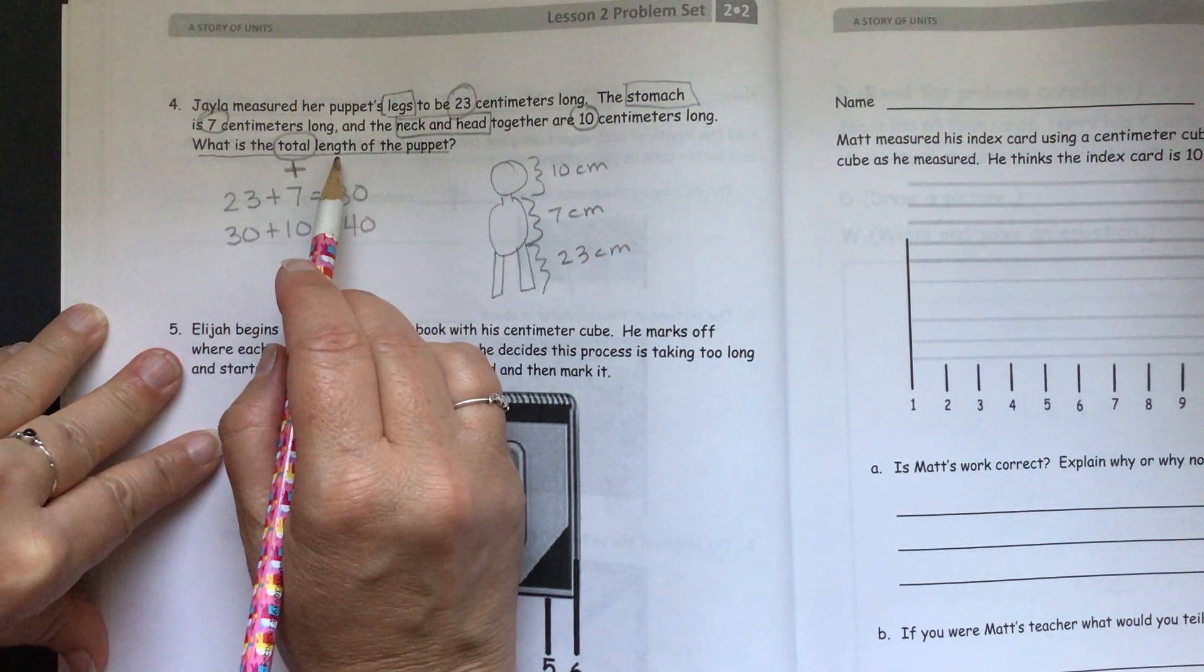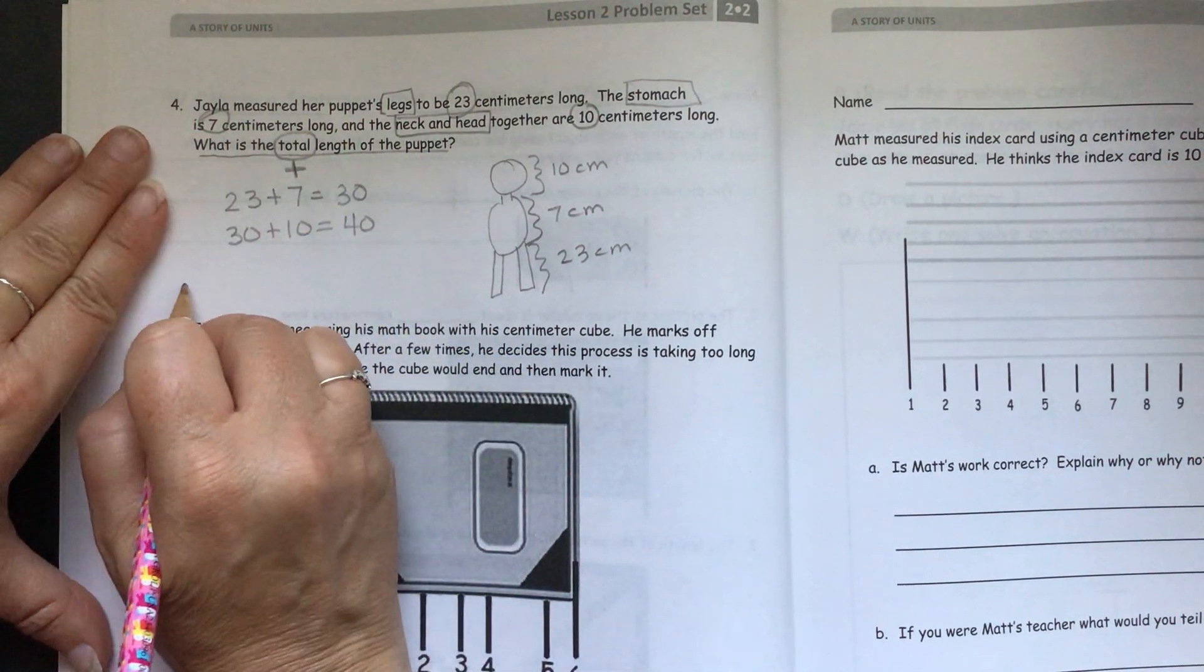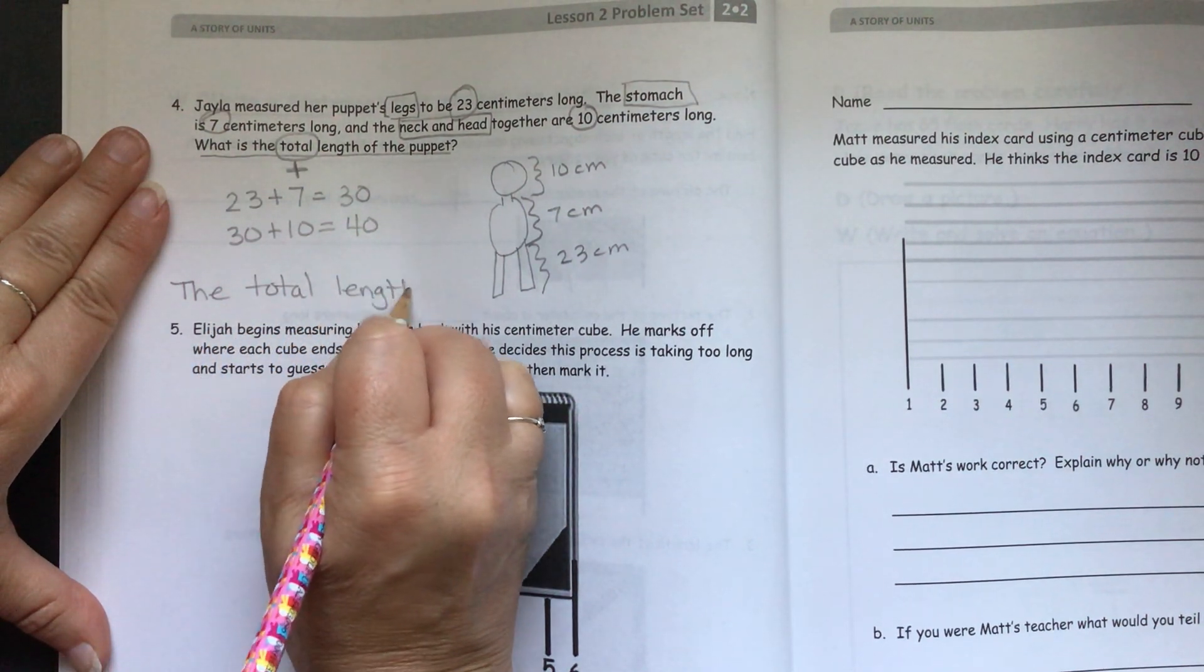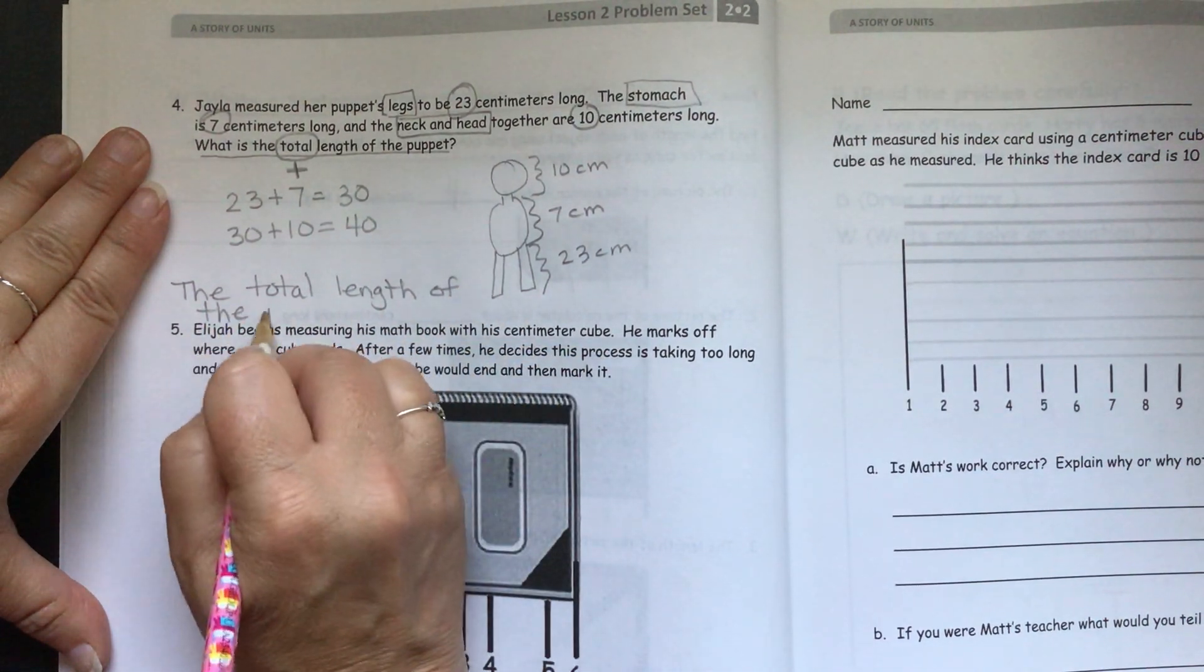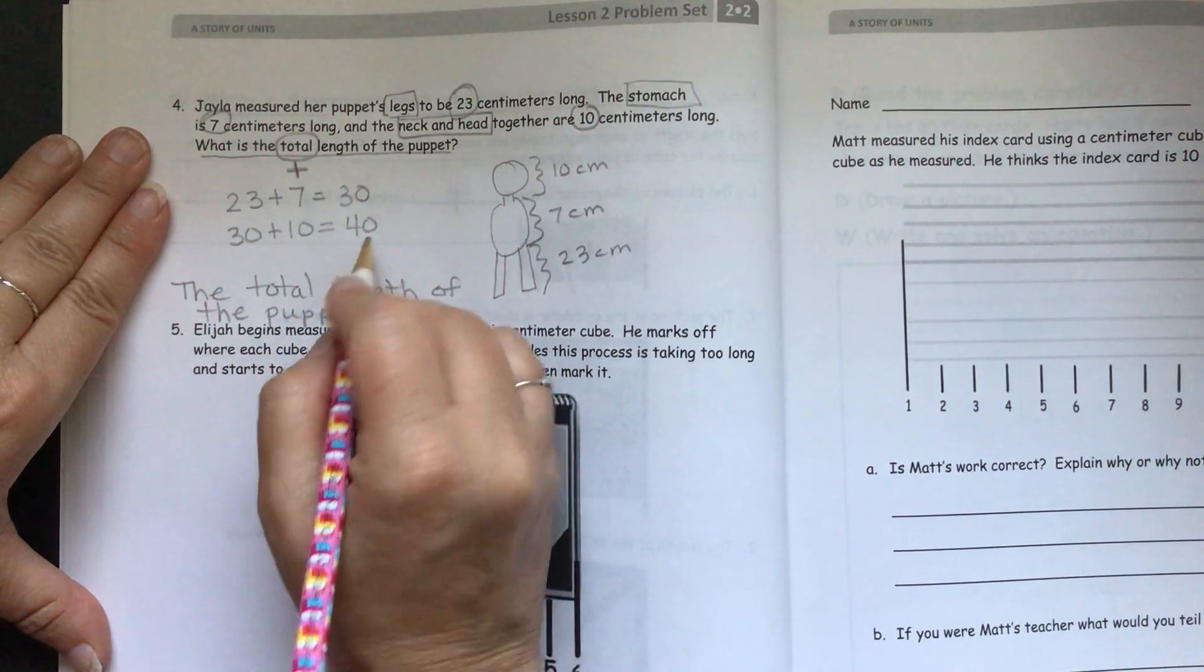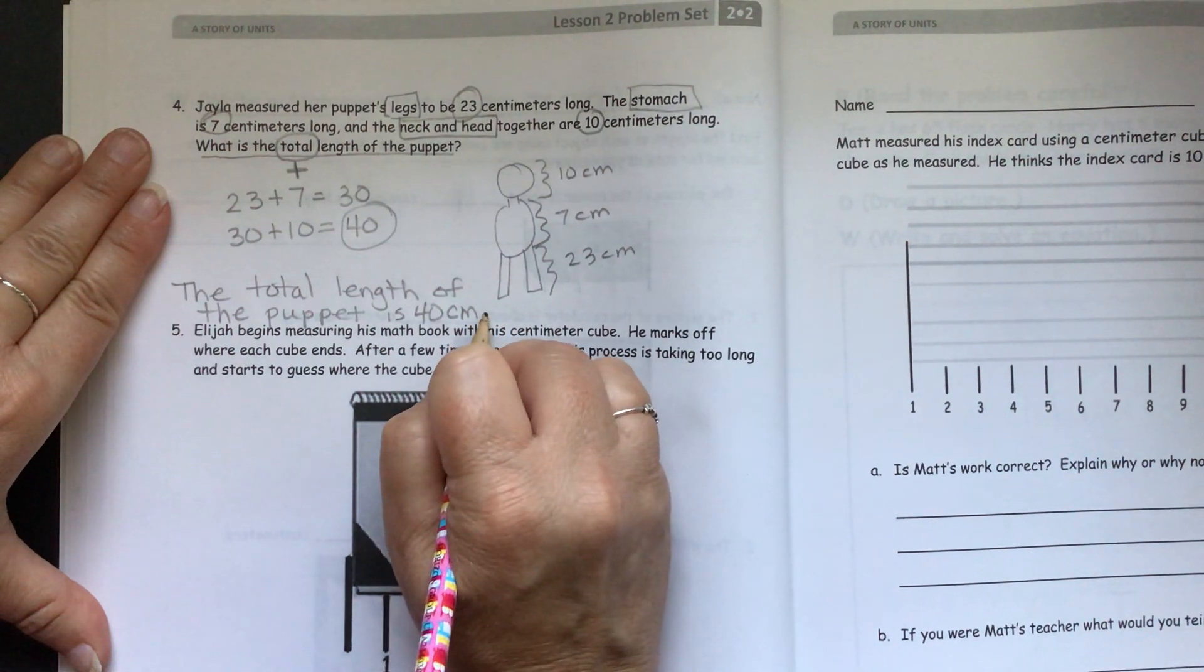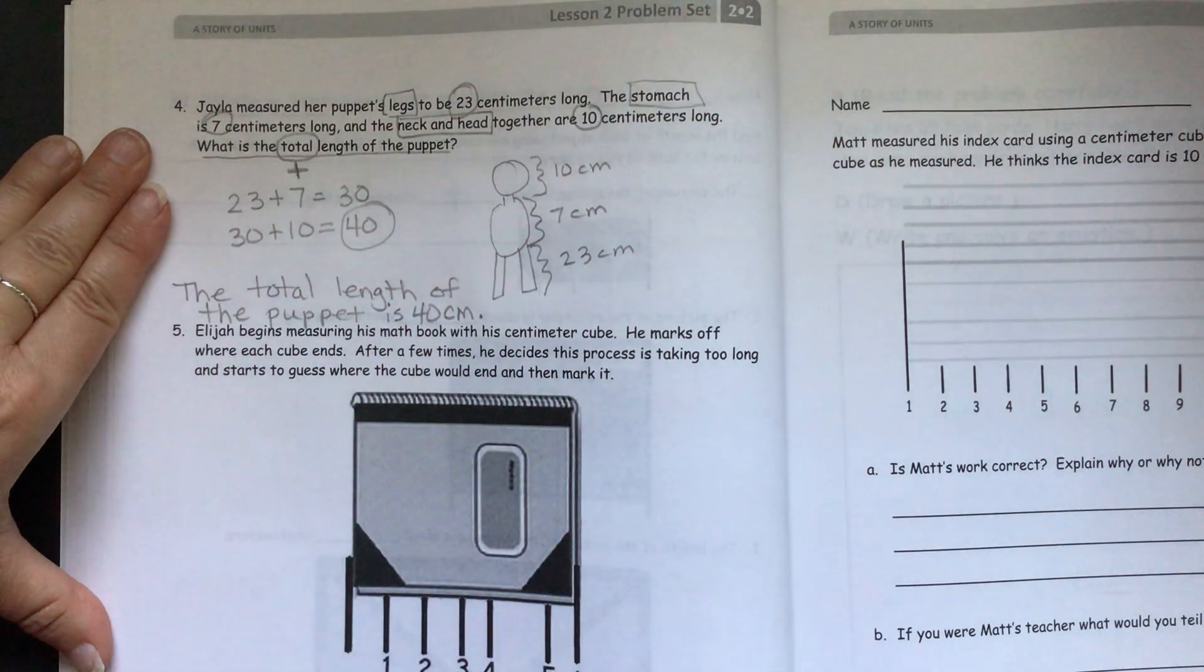Then we need to write our sentence to answer our question. What is the total length of the puppet? The total length of the puppet is 40, and we're using centimeters, so we'll abbreviate CM. The total length of the puppet is 40 centimeters.